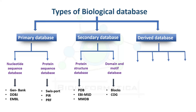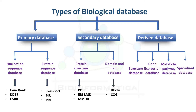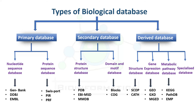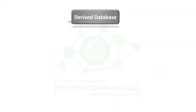Moving to derived databases, they are further classified into four classes: Structure Database, Gene Expression Database, Metabolic Pathway Database, and Specialized Database. Examples of Structure Databases include SCOP and CAT. Gene Expression Databases include GEO, GXD, and MGED. Metabolic Pathway Databases include KEGG, PathDB, and EMP. Specialized Databases include examples such as TGI, GSDB, and GPCRD.